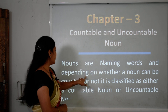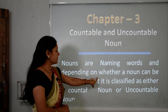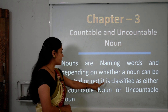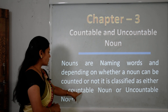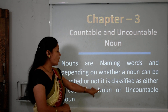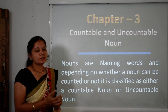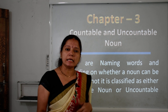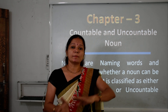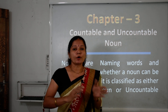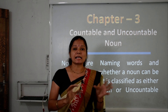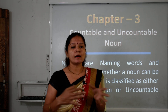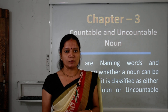Nouns are naming words, and depending on whether a noun can be counted or not, it is classified as either a countable noun or an uncountable noun. So nouns can be counted or not, and it is classified into these two categories: countable nouns or uncountable nouns.